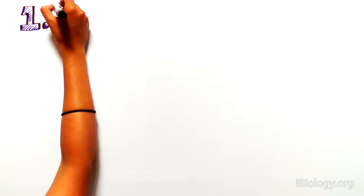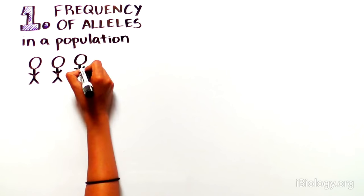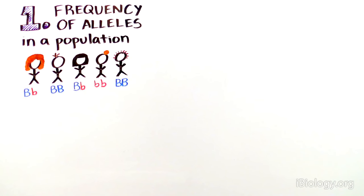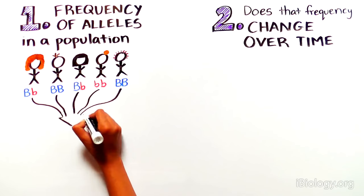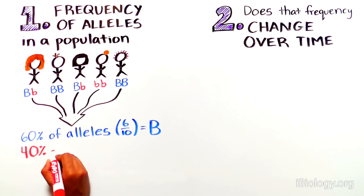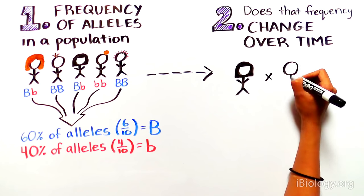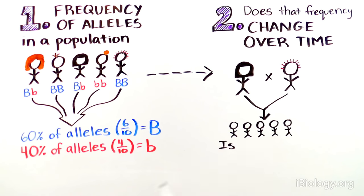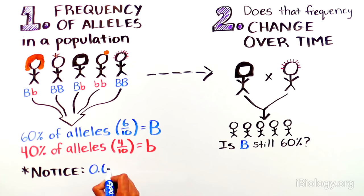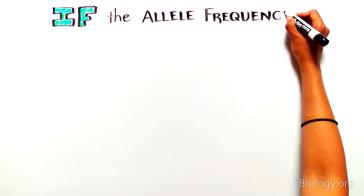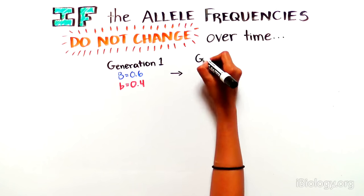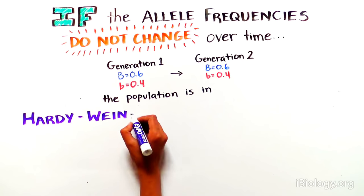They were interested in understanding: one, what is the frequency of specific alleles in a population — so what fraction of the total number of alleles are dominant (capital B) or recessive (lowercase b) — and two, as the organisms mate and have offspring over many generations, whether the frequency of those alleles changes over time. For example, if you start out with 60% capital B and 40% lowercase b, are there still 60% capital B and 40% lowercase b after mating? Notice that the allele frequencies 0.6 and 0.4 add up to 1, which is a key aspect of solving Hardy-Weinberg equilibrium problems.